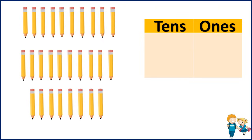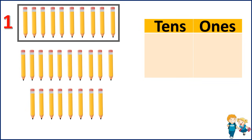Now let's take the next set of objects. Here we have some pencils, and we are going to group them as 10. Now let's start counting the pencils: 1, 2, 3, 4, 5, 6, 7, 8, 9, 10. So this is 1 ten.